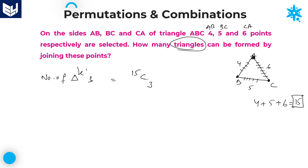Many students are confused at this point and directly write the answer as 15C3 — but that is wrong. The total number of triangles is 15C3 only if all 15 points are non-collinear. However, according to this diagram, on line AB, 4 points are collinear, so you cannot form even a single triangle using only those 4 points.